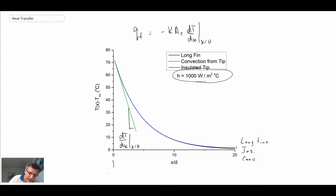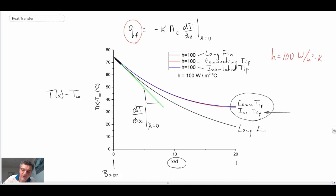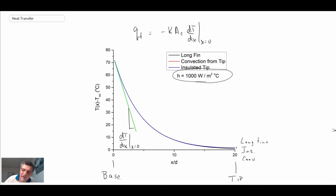And so this here is the base of the fin, and this here is the tip. Okay, so looking at the two different solutions, comparing them. First of all, we noticed that our slope is changing significantly.